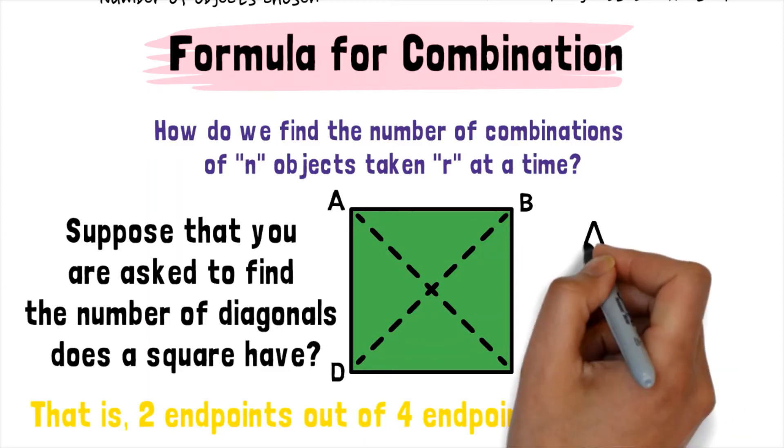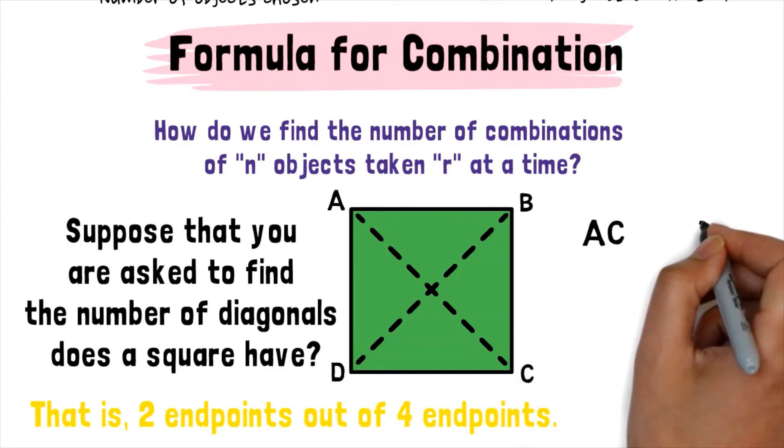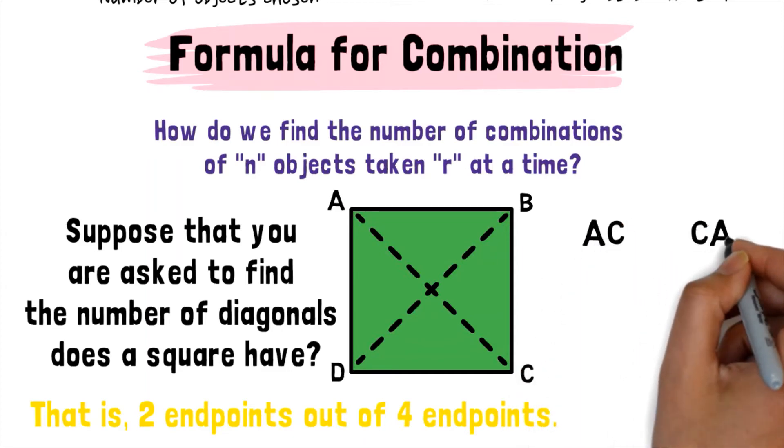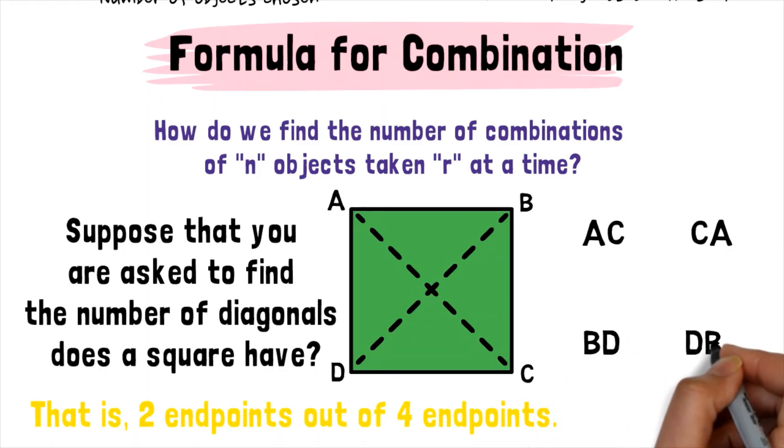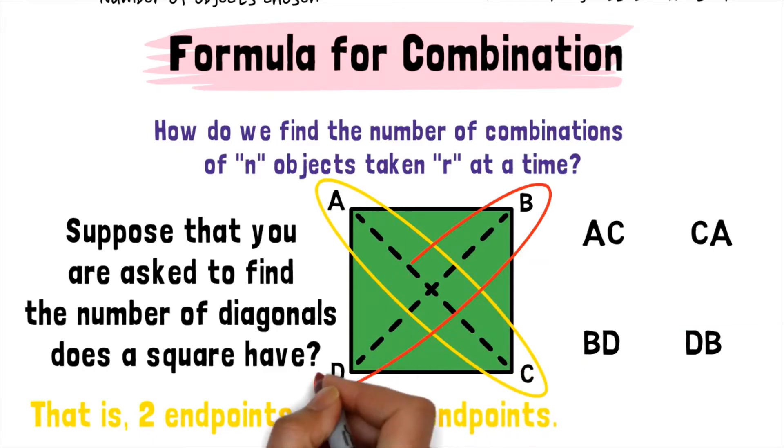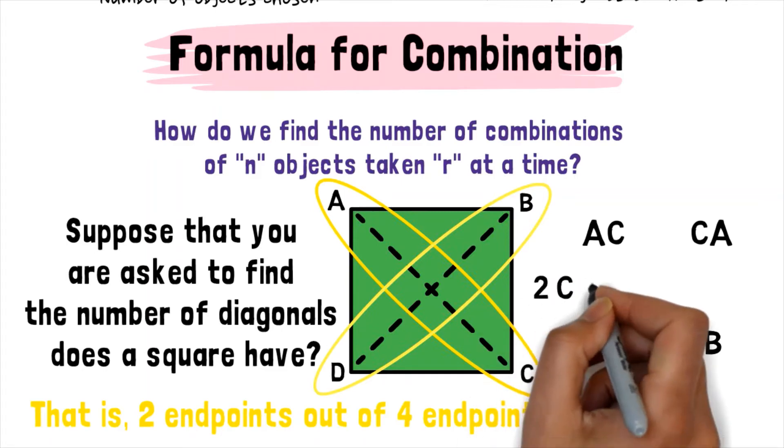Line segments AC, CA, BD, and DB. But as you notice, we can see that AC is the same as CA. In the same manner, BD is also the same with DB. Thus, there are only two combinations.